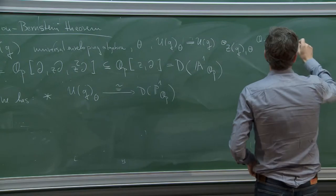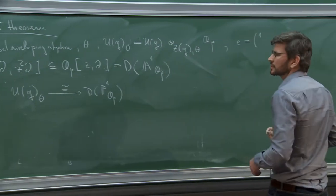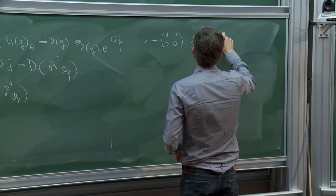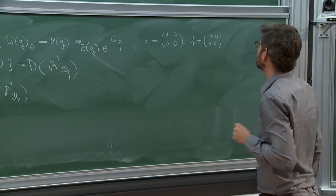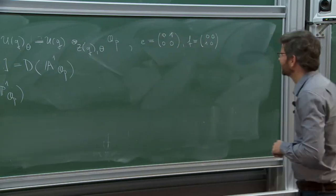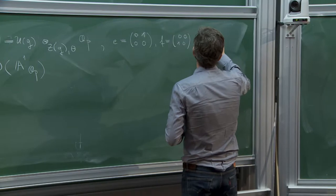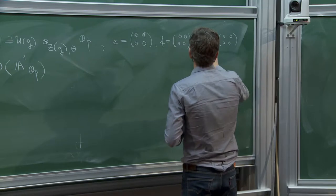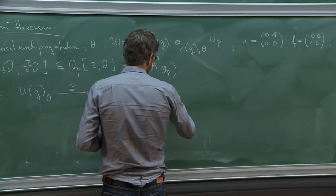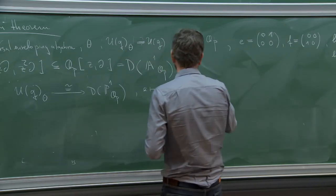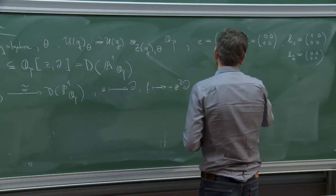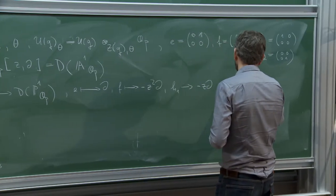This can be made explicit quite easily. If I fix basis vectors of the Lie algebra E, F, H1, H2, then this map is given quite explicitly: E is mapped to delta, F is mapped to minus Z squared delta, and then H2 has to be mapped to Z delta.